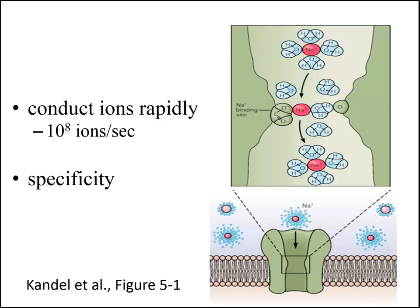Ion channels also recognize and exhibit specificity for specific ion species — for example, sodium, potassium, chloride, and calcium. Most types of ion channels allow only one ion species, while some allow two or more. For example, potassium channels have a narrow pore that excludes sodium ions.